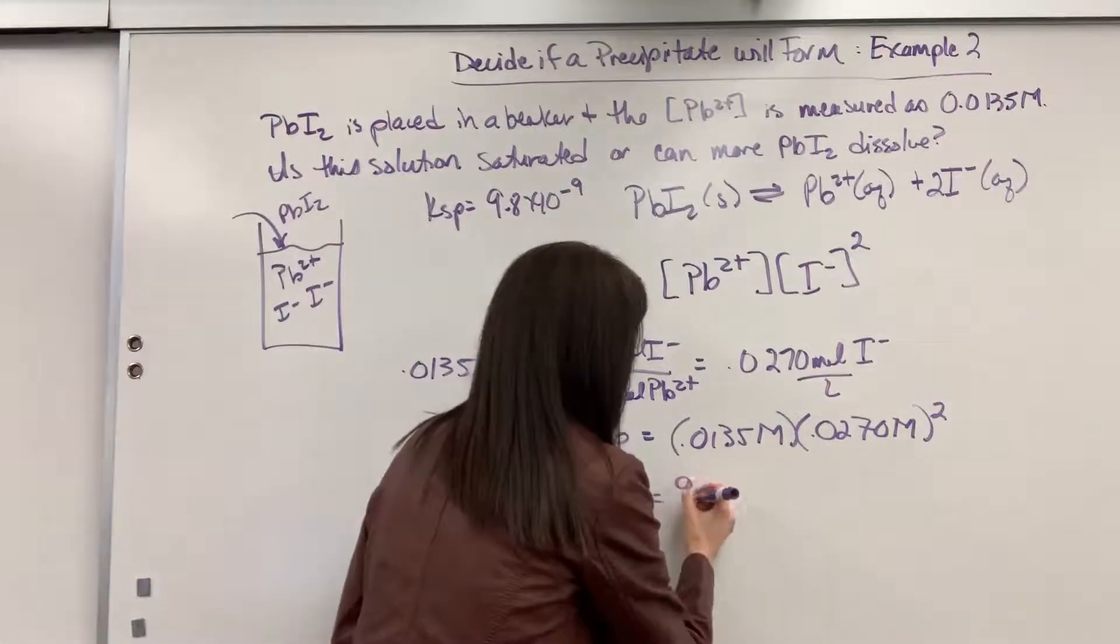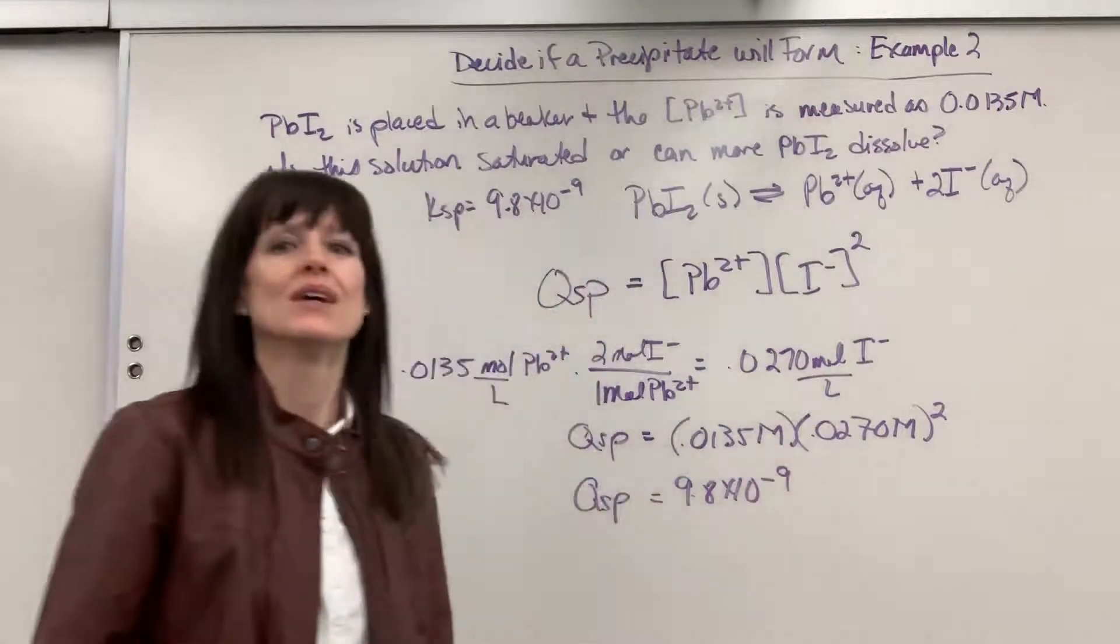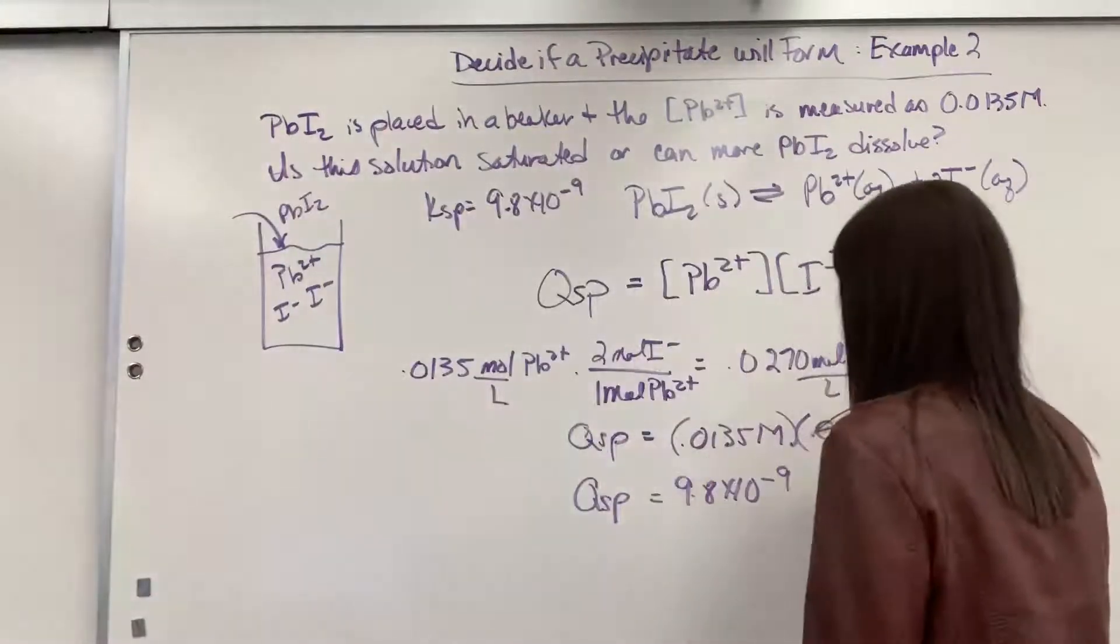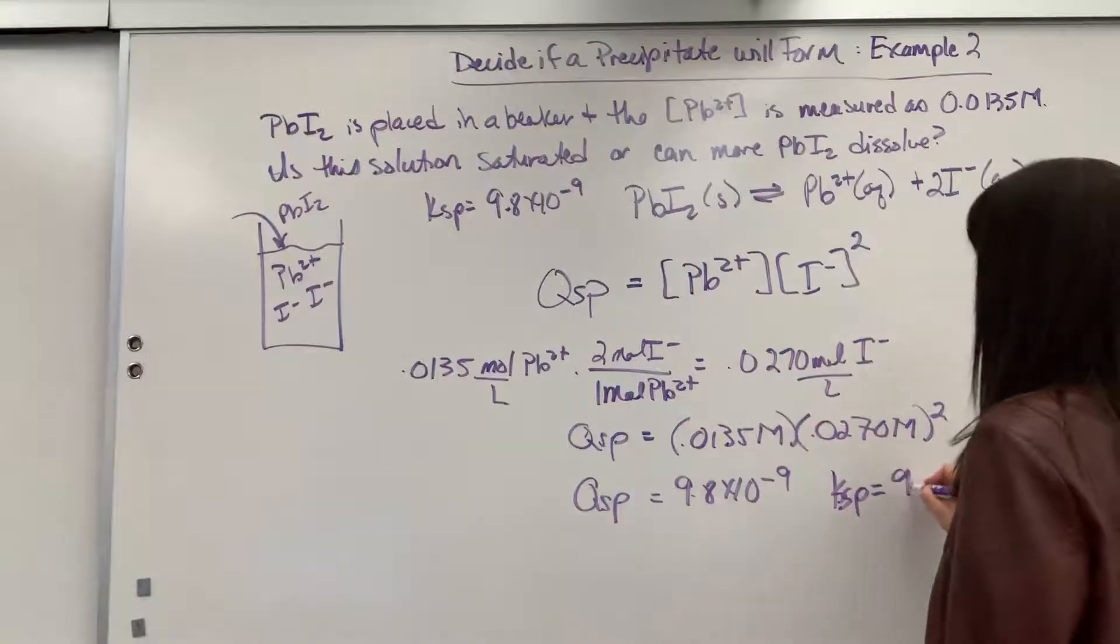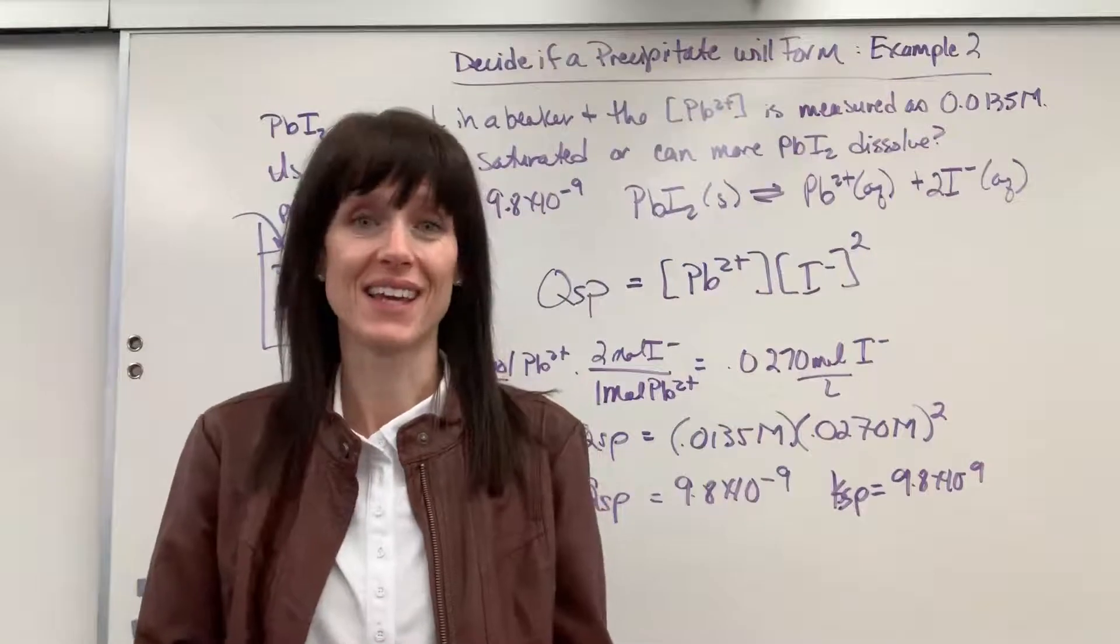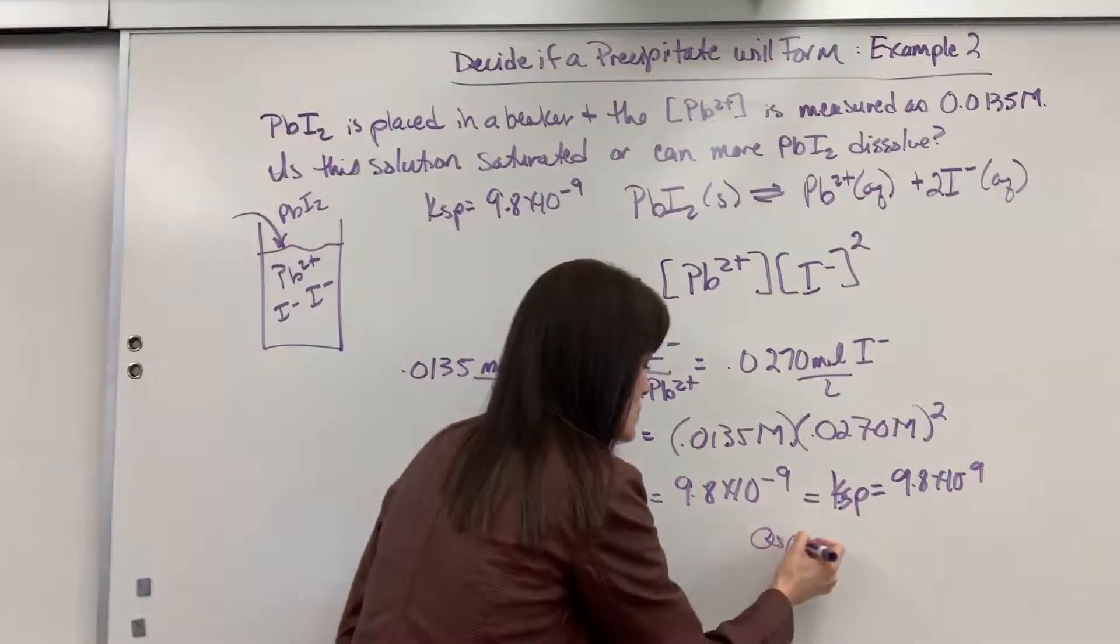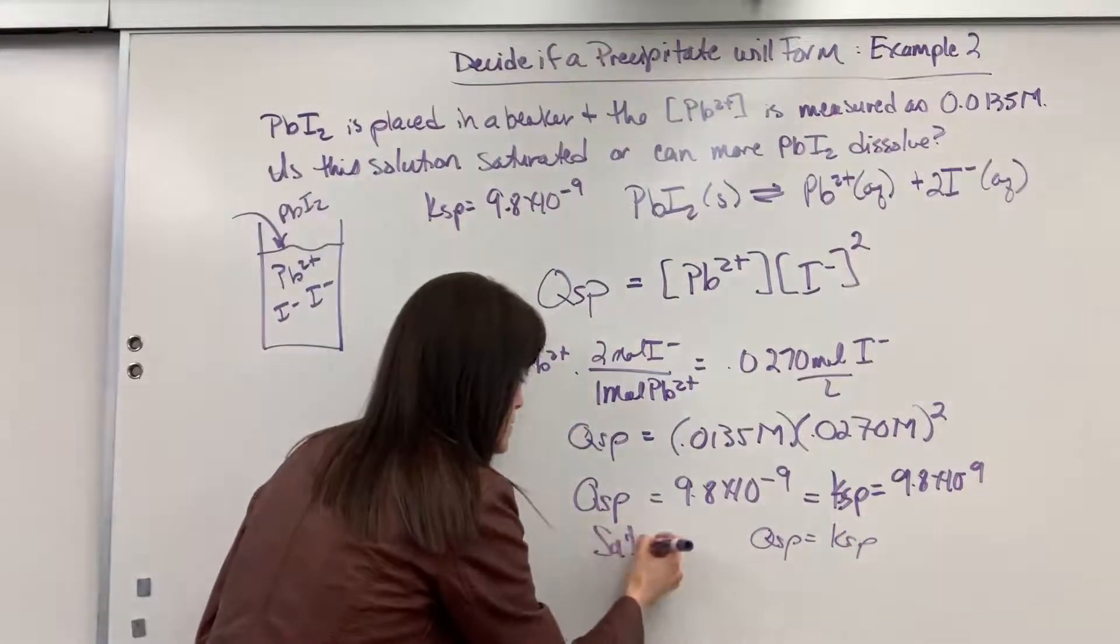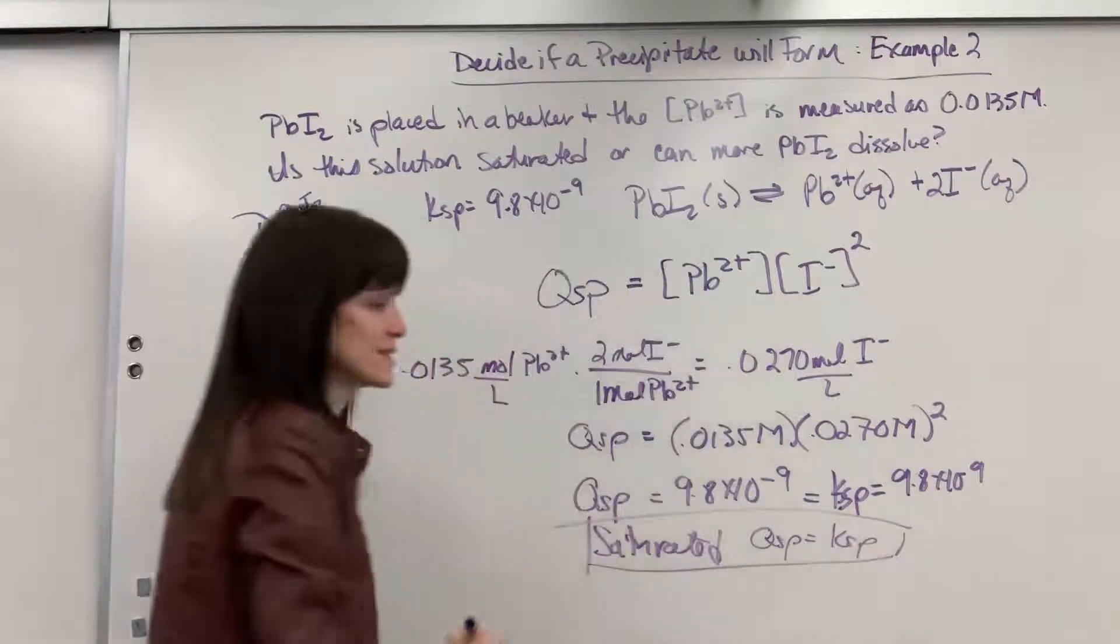So now I have to compare this to KSP. Well, KSP, one more time, KSP equals 9.8 times 10 to the minus 9. So what does that tell us? These numbers are the same. QSP equals KSP. That means this is saturated. Saturated.